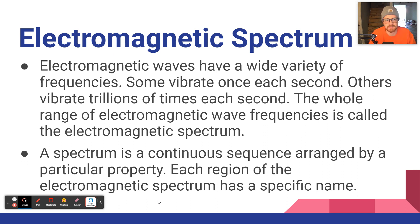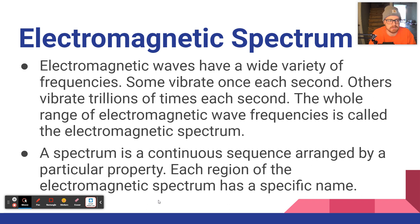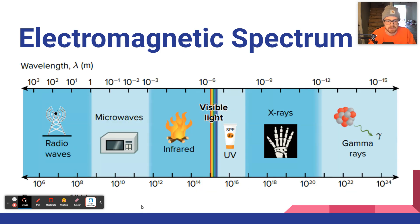Electromagnetic waves have a wide variety of frequencies — some vibrate each second, others vibrate trillions of times per second. That's frequency. We call this range the electromagnetic spectrum — a particular range of different waves that you've heard of and use every single day. Let's look at this image here.